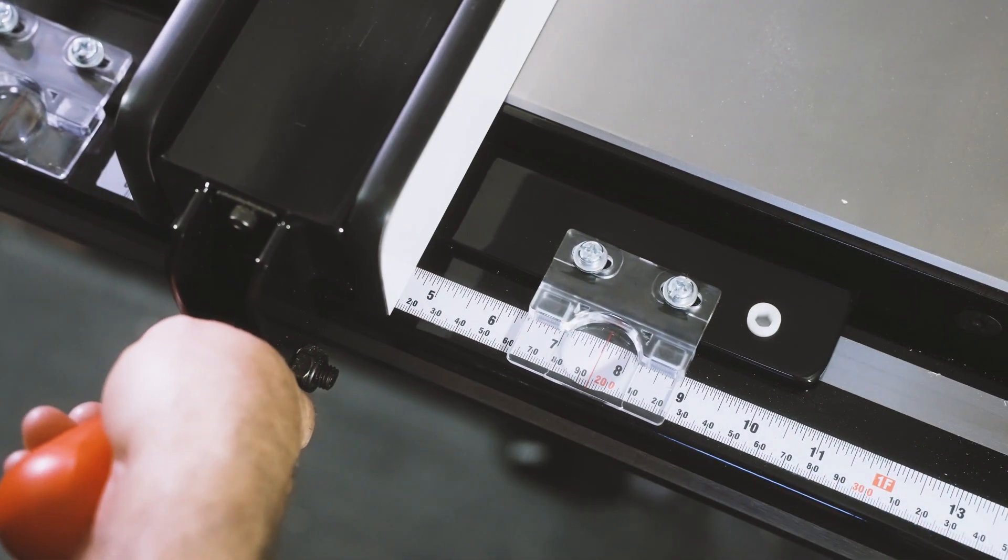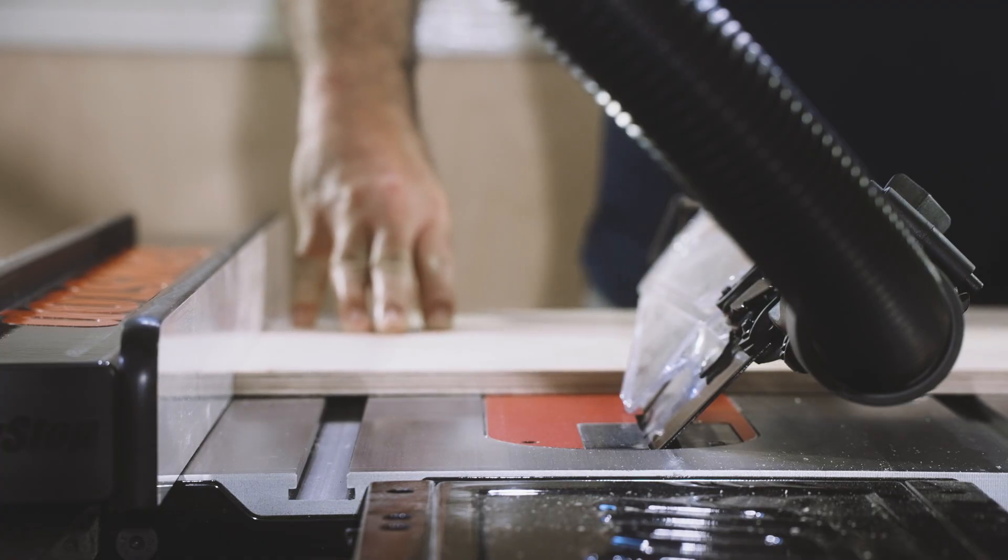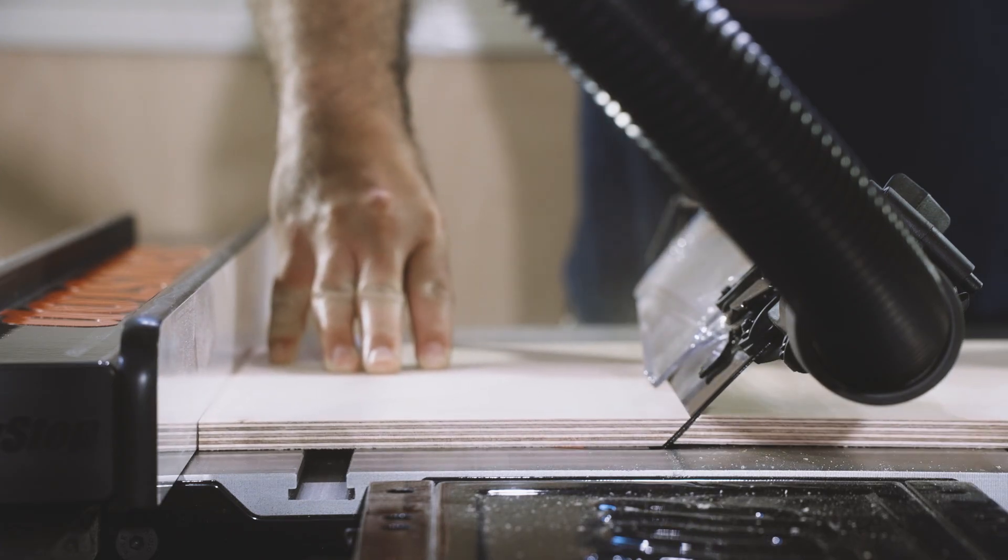Because it's a bevel, we'll set our fence to 7 and a half for the first one, which will actually make it 8 inches wide on the top face.